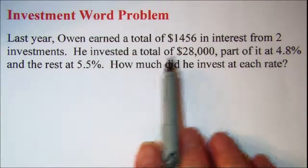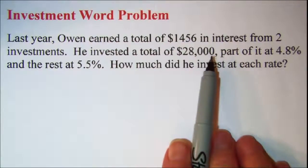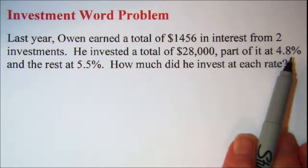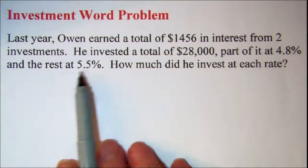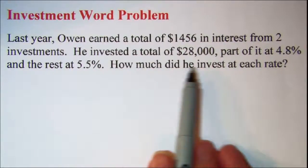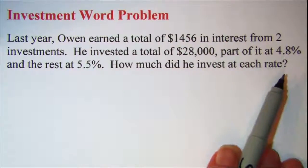He invested a total of $28,000, part of it at 4.8% and the rest at 5.5%. How much did he invest at each rate?